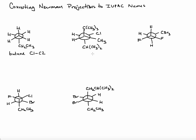Moving on to the second example, it's a little more complicated. The substituents on the front carbon are a tert-butyl group, a methyl group, and a hydrogen. On the rear carbon we have hydrogen, chlorine, and an isopropyl group. This one's not as straightforward as butane, so a helpful intermediate step is to draw it in the bond line formula or wedge-dash formula.